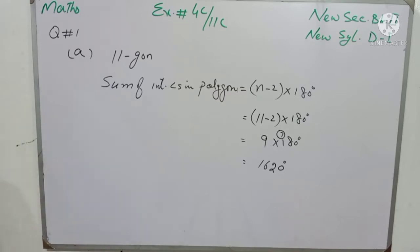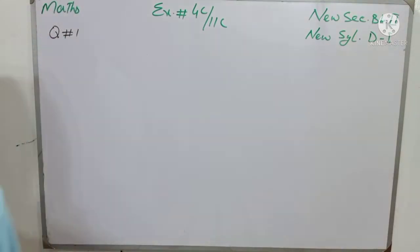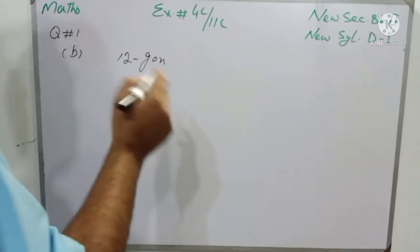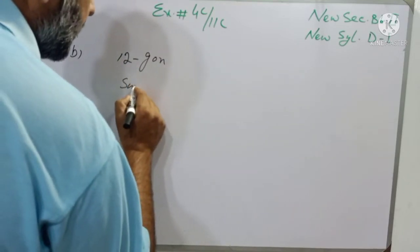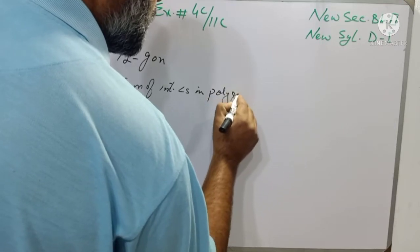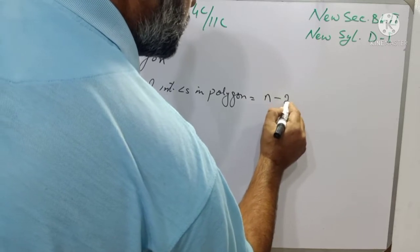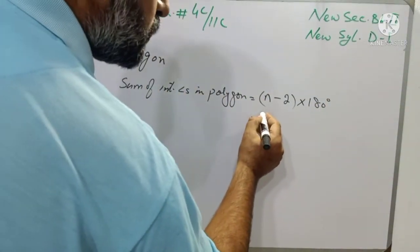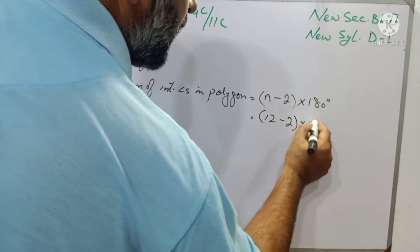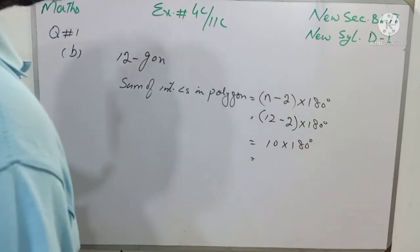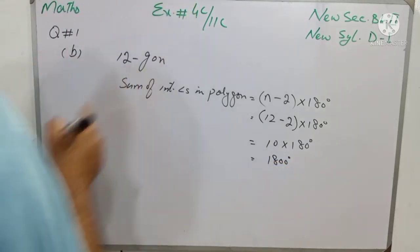Now I am going to solve Part B, which is a 12-gon — a polygon with 12 sides. Again we apply the formula: sum of interior angles in a polygon equals (n minus 2) into 180 degrees, where n is the number of sides. With n = 12, it is written as 12 minus 2 multiplied by 180 degrees. 12 minus 2 means 10, multiplied by 180 degrees, which gives 1800 degrees. So the sum of angles in a 12-sided polygon is 1800 degrees.